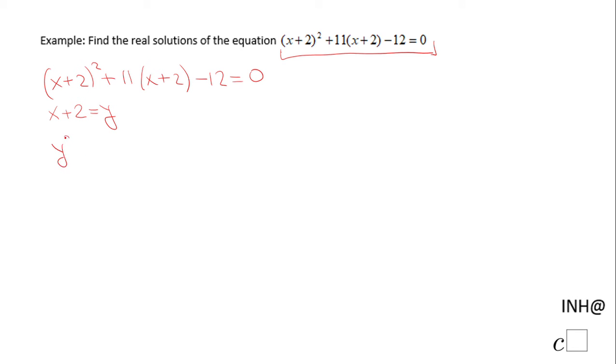We get y² + 11y - 12. This is the way that you can solve this quadratic equation faster by using this substitution. You can FOIL this and use the distributive property, but it's too much work in my opinion.